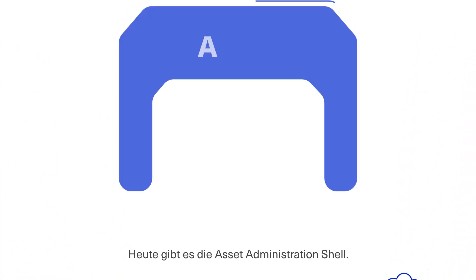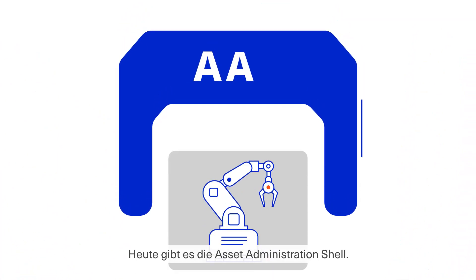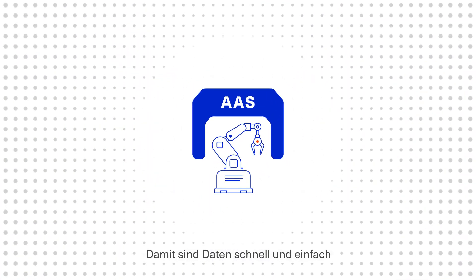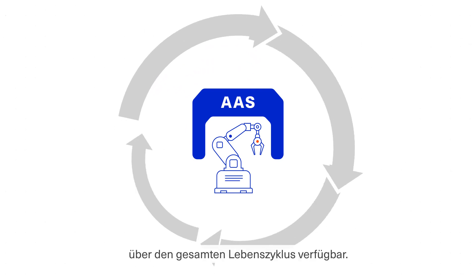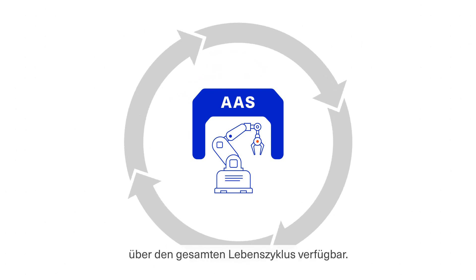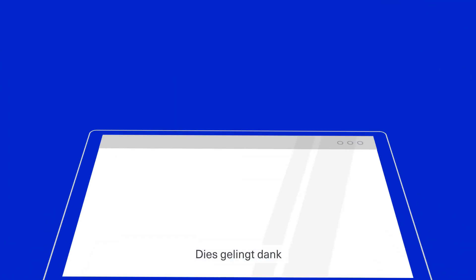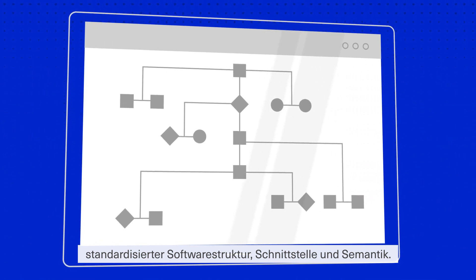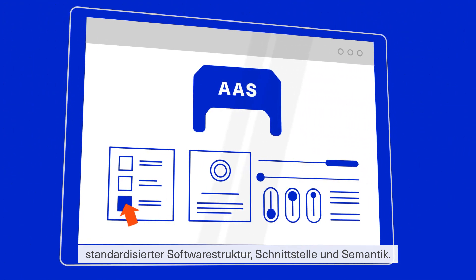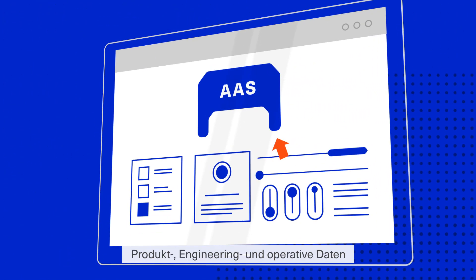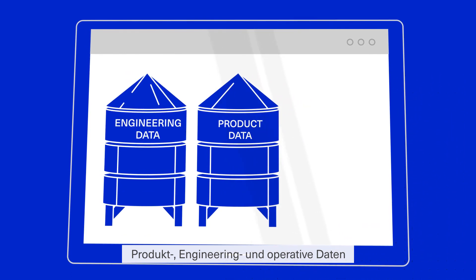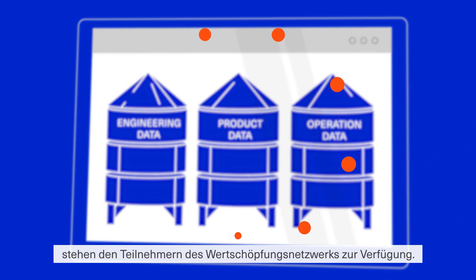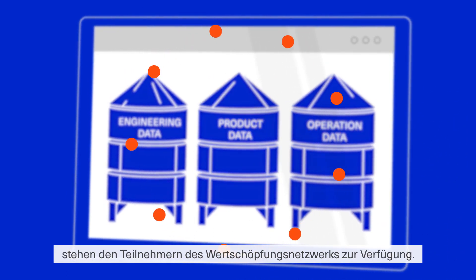We now have the Asset Administration Shell. It makes data available quickly and easily throughout the entire lifecycle. All this is possible thanks to the standardised software structure, interface and semantics. Data from products, engineering and operation are available to all participants of the Value Network.